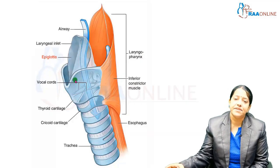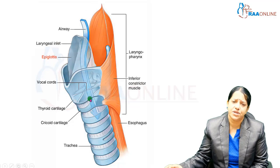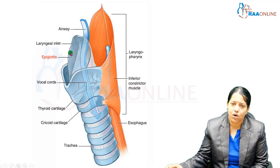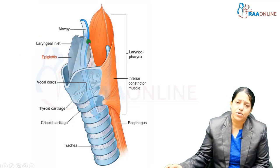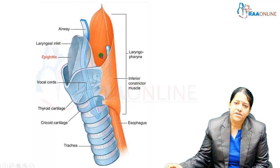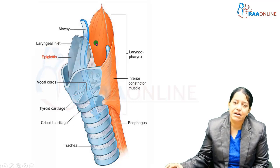Looking at where the larynx is situated: the airway runs from the oral cavity, with the tongue attached to the epiglottis. We have the nasal cavity, nasopharynx, oral cavity, oropharynx, and just below the oropharynx is the pharynx. The laryngopharynx encircles the larynx, and this is where the inlet of the larynx is located.